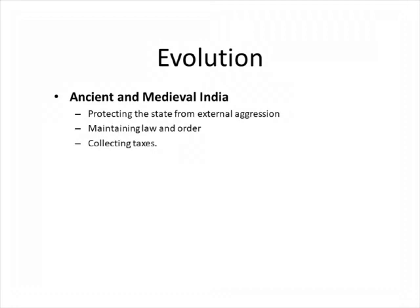We cannot ignore the effective Mughal administrative policy to regulate trade, extensive road links, manufacturing industries, and agriculture. That is why the Indian economy was large and prosperous under the Mughal Empire. By 1700, the GDP of Mughal India was the largest in the world, a leader in manufacturing up until the 18th century. The real wages and living standards in 18th century Mughal Bengal and South India were higher than in Britain, which in turn had the highest living standards in Europe.